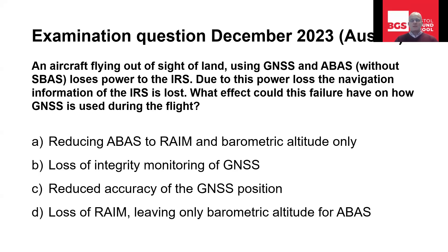Remember, there is another one: GBAS, ground-based augmentation system. The GNSS and ABAS loses power to the IRS — the inertial reference system. Due to this power loss, the navigation information of the IRS is lost. What effect could this failure have on how GNSS is used during the flight?